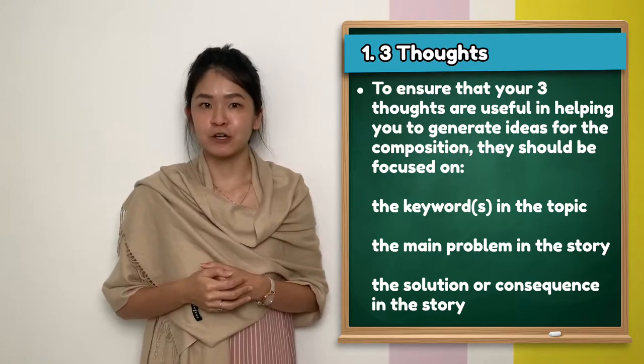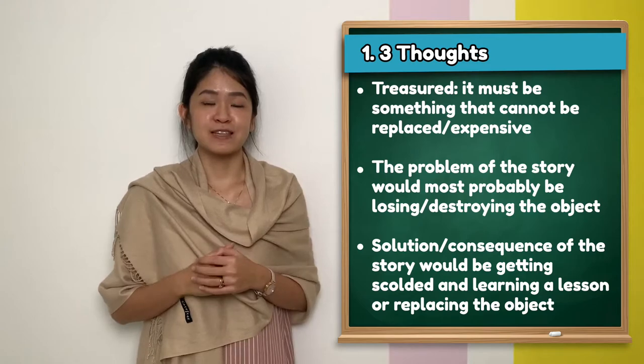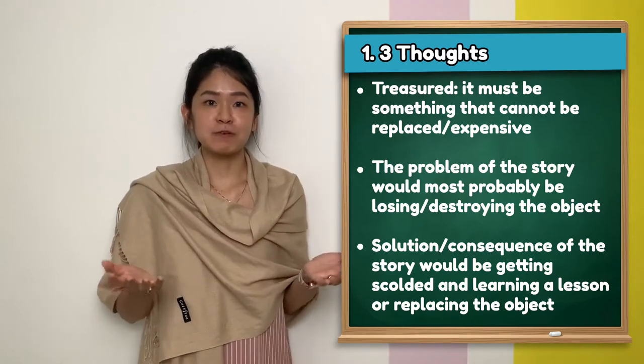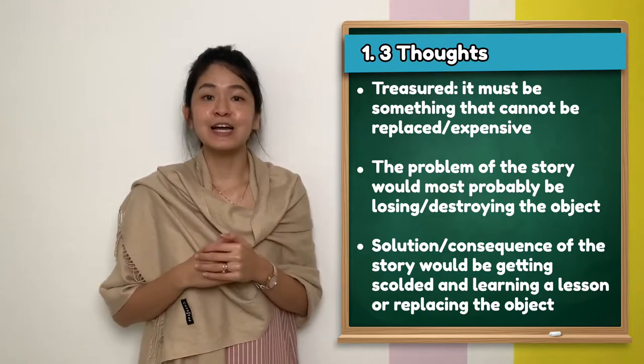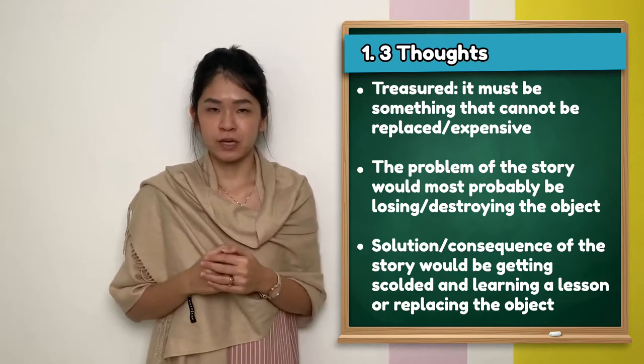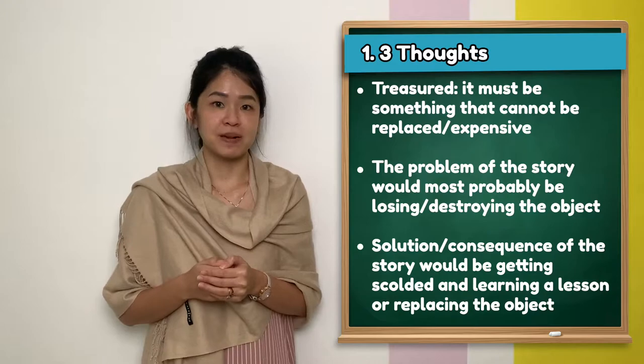Looking at the topic, my 3 thoughts will be: treasured, it must be something that cannot be replaced or expensive. The problem of the story would most probably be losing or destroying the object. The solution or consequence of the story would be getting scolded and learning a lesson or replacing the object.